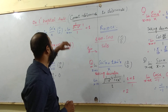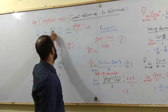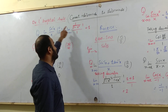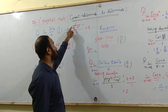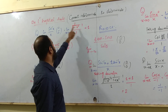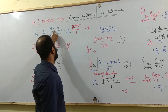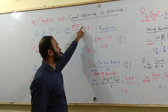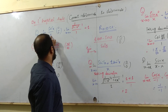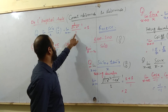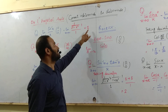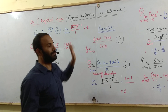I am going to take the derivative of sine inverse x, which is 1 over square root of (1 minus x²), and the derivative of x, which is 1. Now you can put the limit and you will get the answer, that is 1.